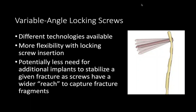Variable angle locking is a newer technology — within the last 15 years — where you can still lock screws into plates at a variable angle rather than a strict 90 degrees. Plates may allow 10-30 or even 40 degrees of variable angle. This provides more flexibility when placing locking screws around joints or fracture sites, allowing you to angle away from certain structures. Companies commonly use this as a selling point, comparing their variable angle ranges.